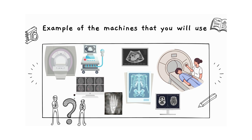Here are some examples of the machines we will use in clinical and when we work. On the right side, you can see a CT scan. On the left side, you can see MRI and ultrasound. You can also see images for MRI, ultrasound, X-ray, and CT scan.